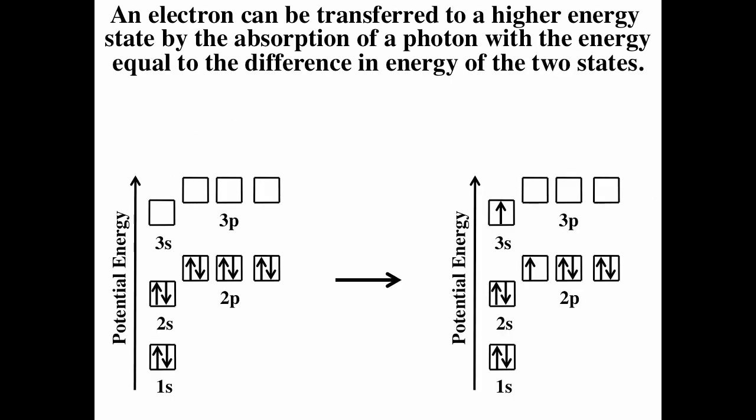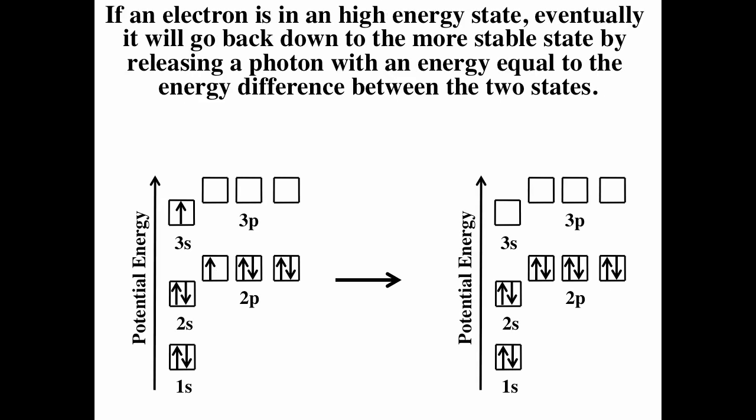If we have an atom in its ground state, we can cause an electron to get excited. For instance, in this example, we're going from a 2p to a 3s orbital. If we shine light that has photons with energy equal to the energy difference, and it absorbs that photon, then the electron gets excited. Once the electron is excited, eventually it will fall back down into its ground state. When it relaxes back down, it will release a photon with an energy equal to that energy difference.